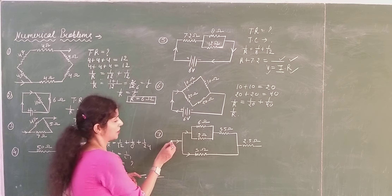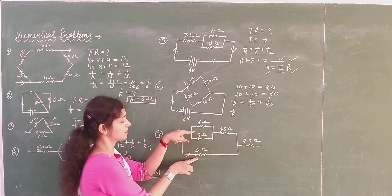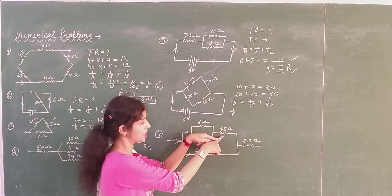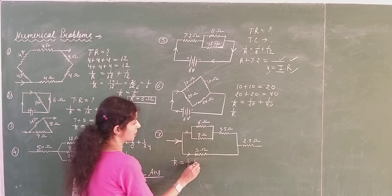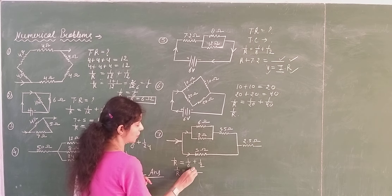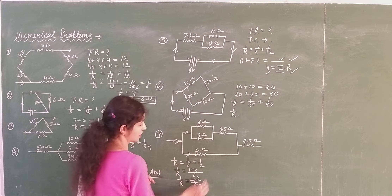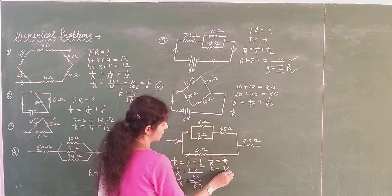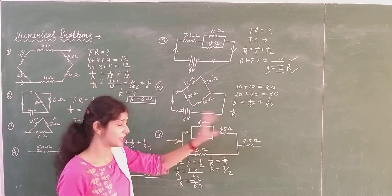Now see this combination. The current divides into portions, so this branch is parallel with this combination, and these 2 are also parallel. To find the resultant use 1 over R equals 1 over 6 plus 1 over 2. The LCM of 6 and 2 is 6, so 1 over R equals 4 over 6, which gives 2 over 3. Therefore R equals 3 over 2 ohm. This result is then connected in series with the 3.5 ohm resistor.